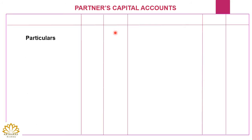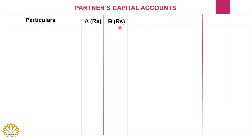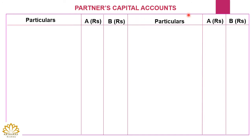Under the fluctuating capital account method only one account is prepared — the partners capital account — and all items relating to the partners capital will be posted under this account. On the debit side the first column is for particulars, then for each partner a separate column is opened — here for example partners A and B. Likewise on the credit side, particulars and separate columns for partner A and partner B are opened. Don't forget to mention the debit side and credit side of the capital account.